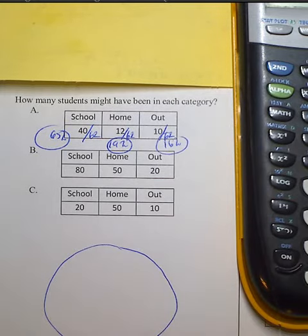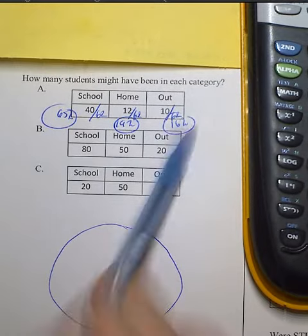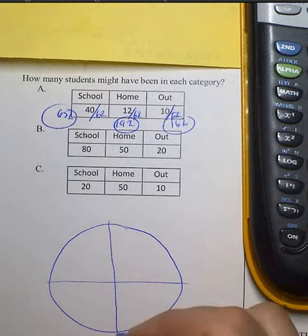Now I need to draw a circle that is going to model this information. So I personally do it like this. I'm going to split this up into four sectors. Each sector is 25%.